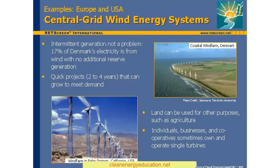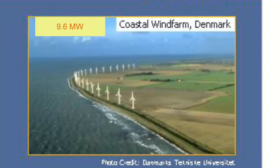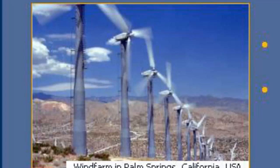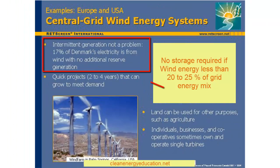Central grid wind energy systems — examples from Europe and the USA. The photos on this slide show two wind developments that are tied to the central grid. On the right, the 9.6 megawatt coastal wind farm at Lawland, Denmark is shown. On the left, an early wind farm in Palm Springs, California is seen. Although their output varies with the wind speed, wind turbines integrate into the electric grid relatively easily. Contrary to popular expectation, no storage systems are needed to buffer the varying output of the turbines.